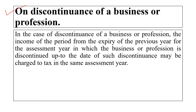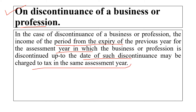The fourth case is discontinuation of business or profession. In the case of discontinuation of a business or profession, the income for the period from the expiry of the previous year to the date of such discontinuation may be charged to tax in the same assessment year. If a company or profession is going to be discontinued, tax has to be paid at that time. In this case, the previous year becomes the assessment year because tax must be paid in the same year.